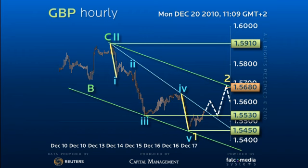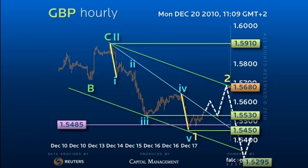From there, we look for a breakdown to, and convincingly through, the 154.85 pivot for the next leg lower towards the 152.95 daily target. A loss of 154.50 at any stage indicates an early resumption of the downtrend.